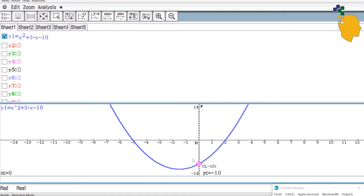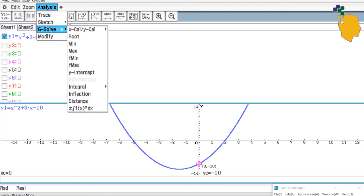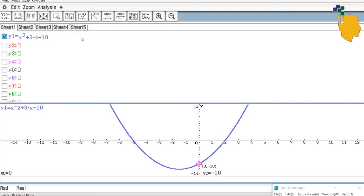And now let's find our x-intercepts. Go to analysis, g-solve, and click onto root. It'll show you your left x-intercept, which is negative 5. And if you want to find the x-intercept on the right side, just click the right arrow and it'll move to the right x-intercept, which is 2.